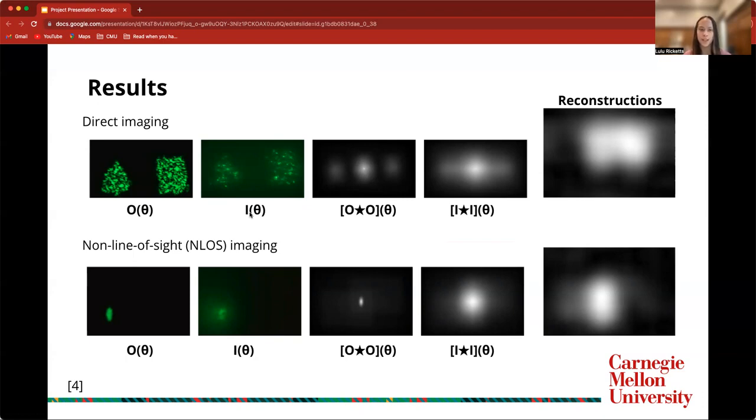The reconstruction doesn't look exactly like the original object, but we can kind of tell that the algorithm is able to pick out that there are two distinct shapes in the object.